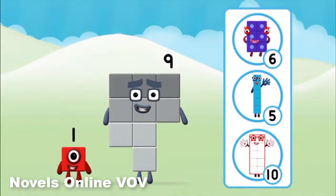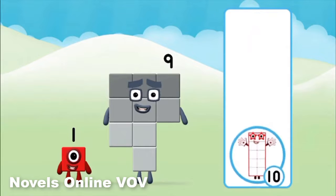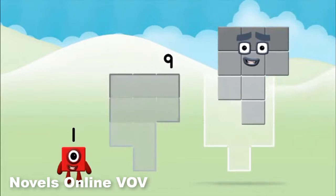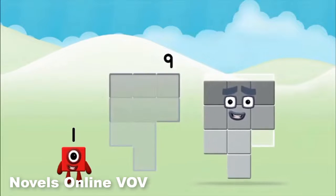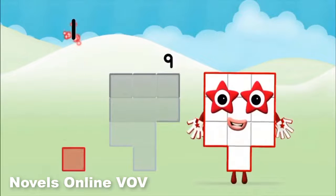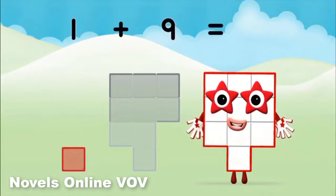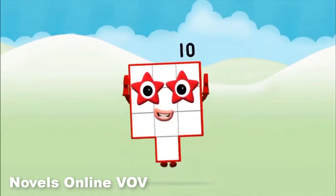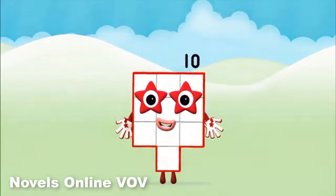Do you know which number block you'll make when you add these two number blocks together? Great! Add the number blocks together! Nine... one. One plus nine equals ten. Marvellous! You made number block ten!